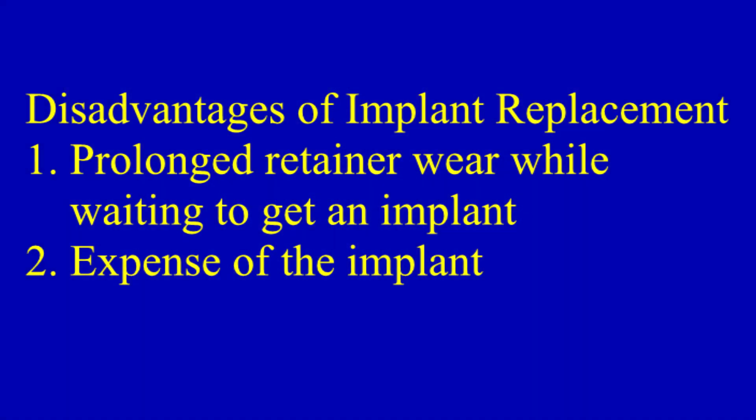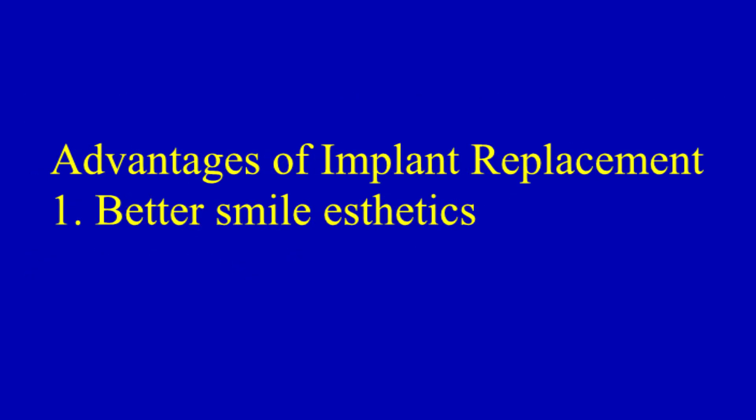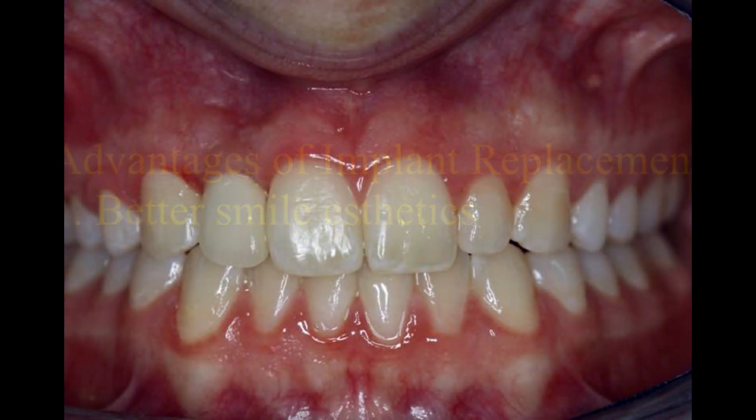This is the downside of the implant replacement choice: your child must wear the upper retainer from the time that the braces are completed until the time that the implant is placed at age 18. The other disadvantage is that this is an additional fee over and above the orthodontic fee — implant fees vary but are in the range of $3,000 per implant. The main advantage to implant replacement of a missing lateral incisor is that it usually produces a more natural and aesthetically pleasing smile.